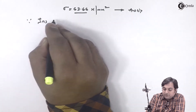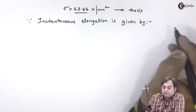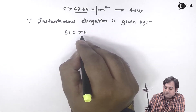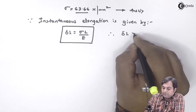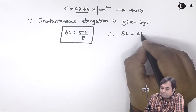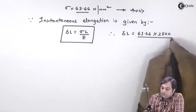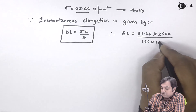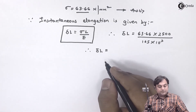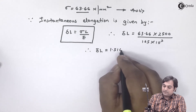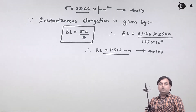Next we have to calculate the instantaneous elongation. Since instantaneous elongation is given by Delta L equal to stress into L upon E, therefore deflection equals 63.66 into 2500 divided by 105 into 10 raised to 3. From this we calculate the instantaneous elongation for gradually applied load as 1.516 mm.